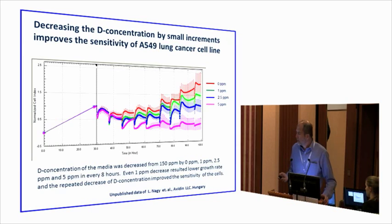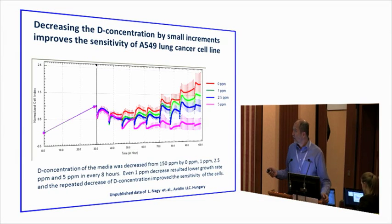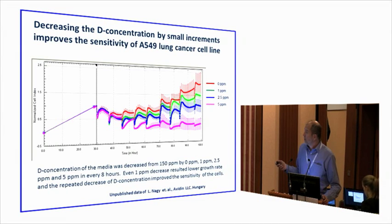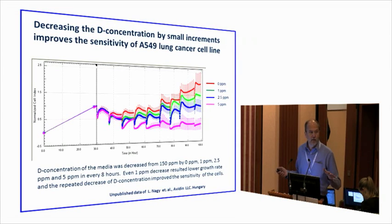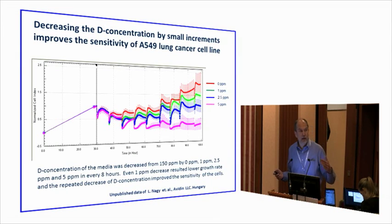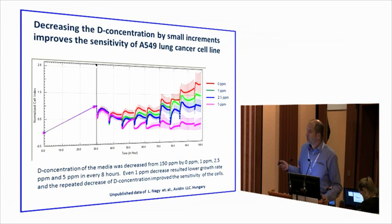In the next experiment, we wanted to show how sensitive cells can be to changing deuterium levels. We changed the deuterium concentration by 0, 1 ppm, 2.5, and 5 ppm every 8 hours, starting at 150 — so 150, 149, 148, 147, 146. Even with 1 ppm reduction every 8 hours, we found a lower growth rate, suggesting that cells immediately recognize a reduction in deuterium concentration.